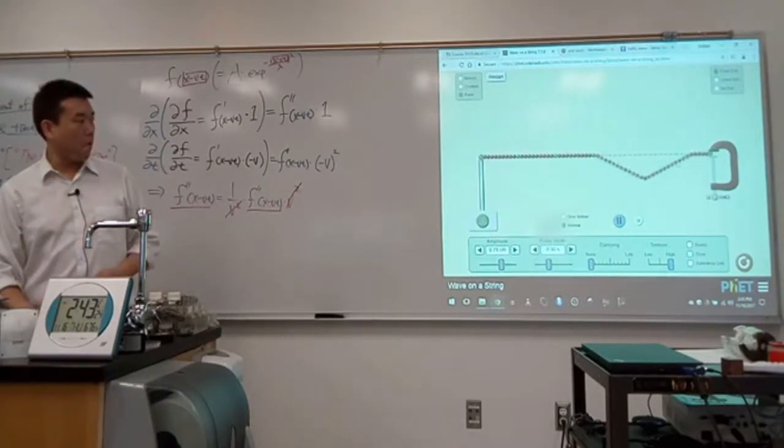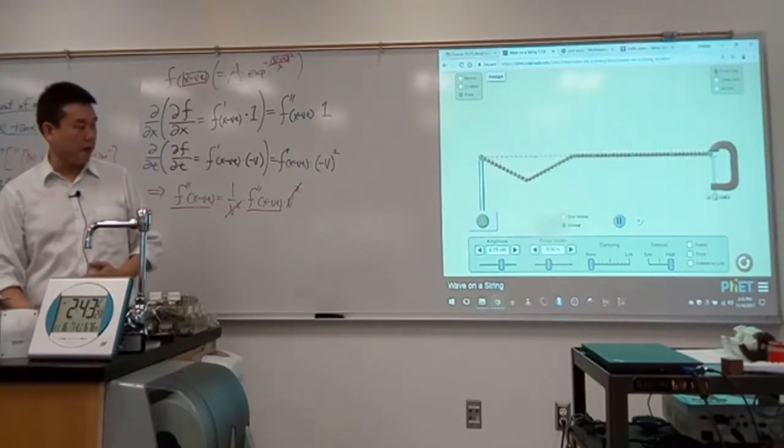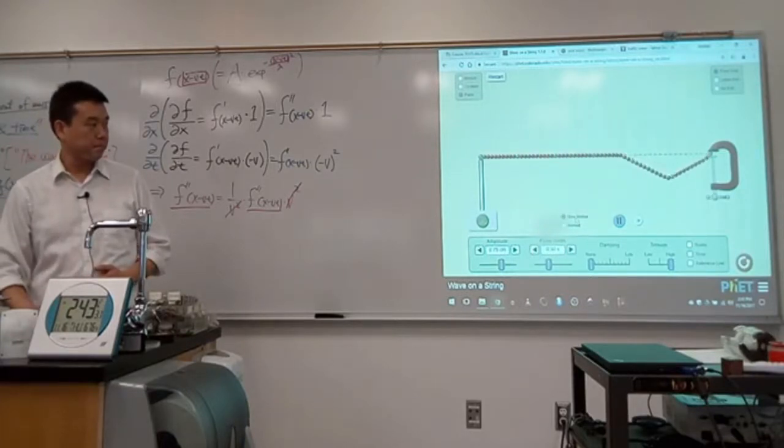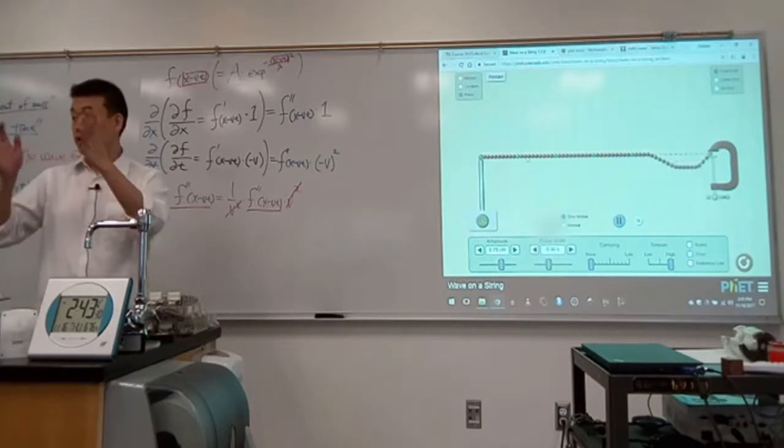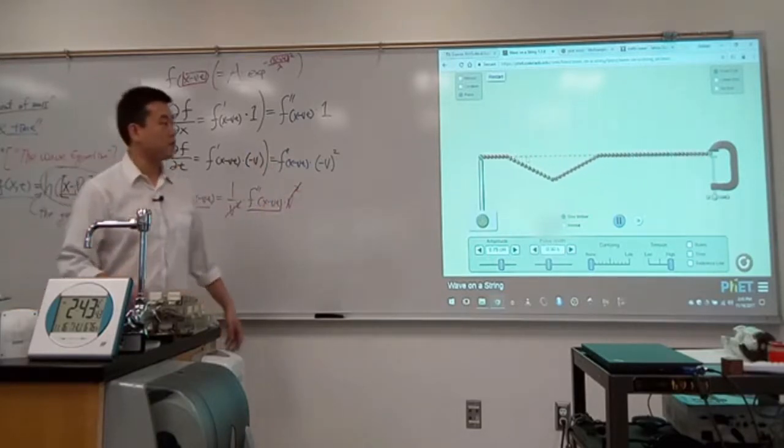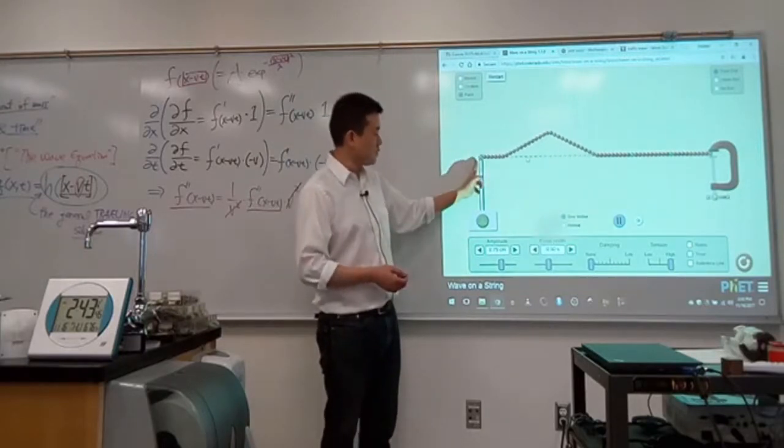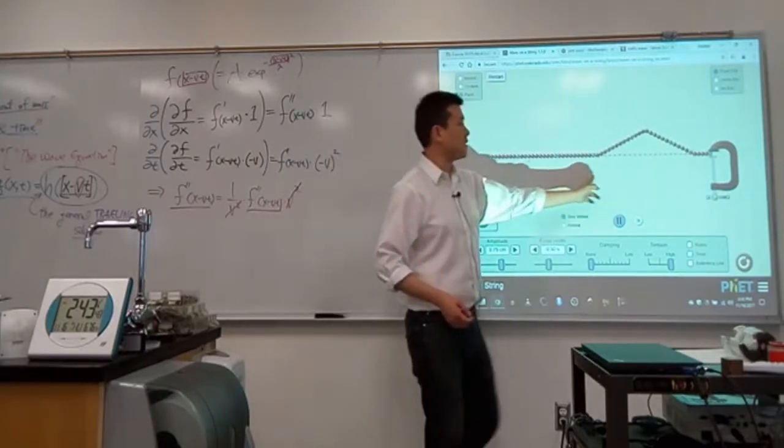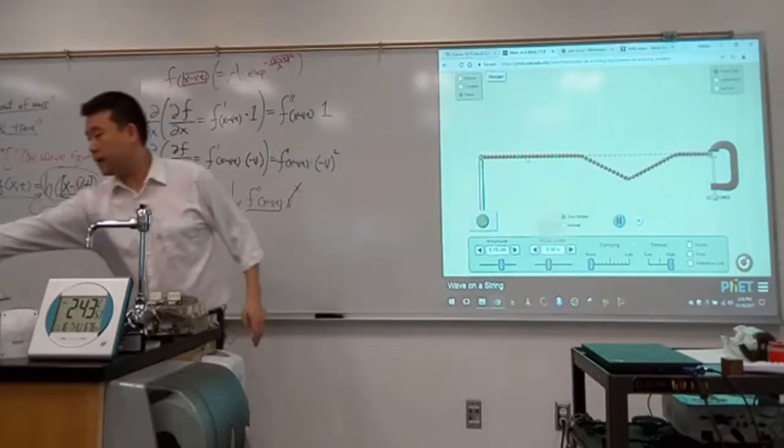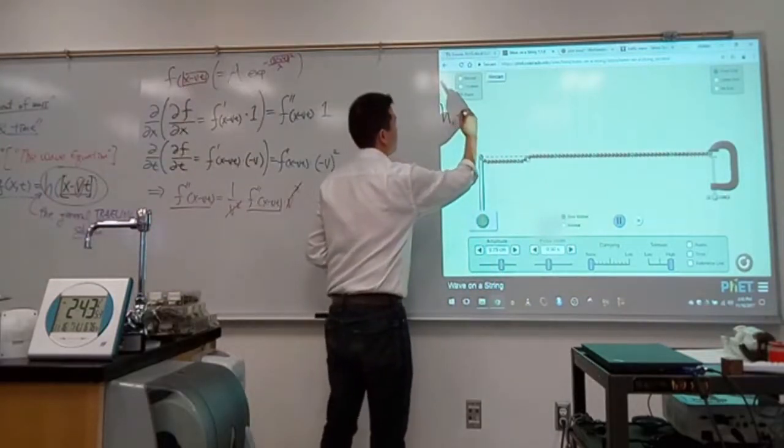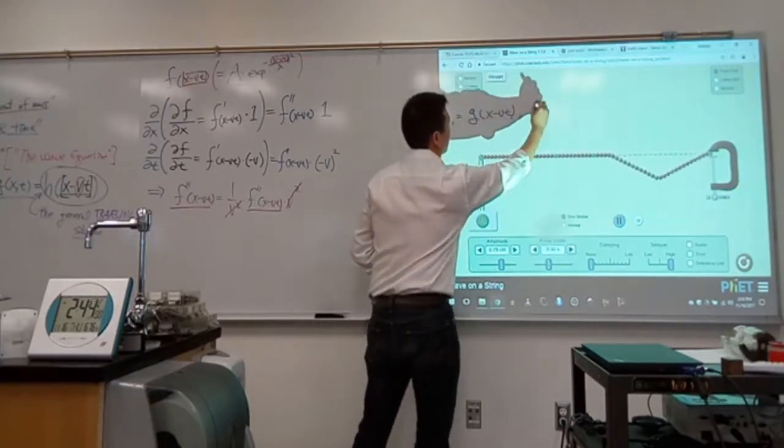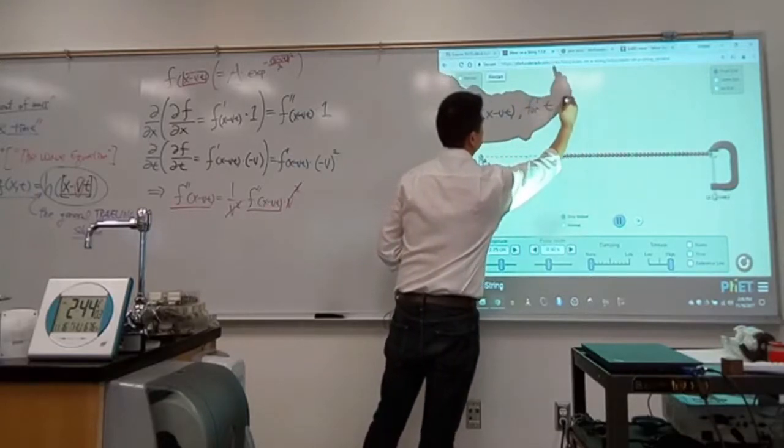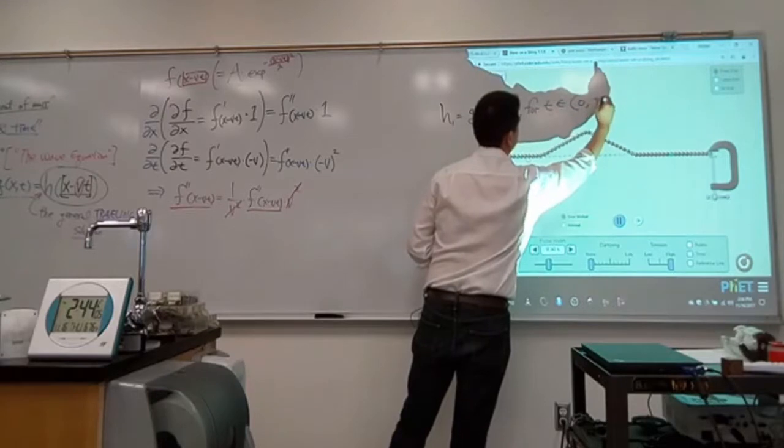This is the sense that I want you to have. When we are trying to describe this wave, we can try to do it piecewise. For the period of time from zero to some time T1, it's described by H1 equals some shape X minus VT for T from zero to some time T1.